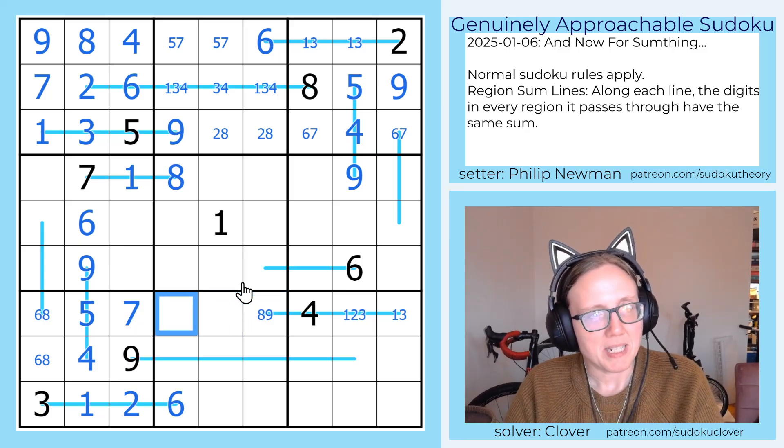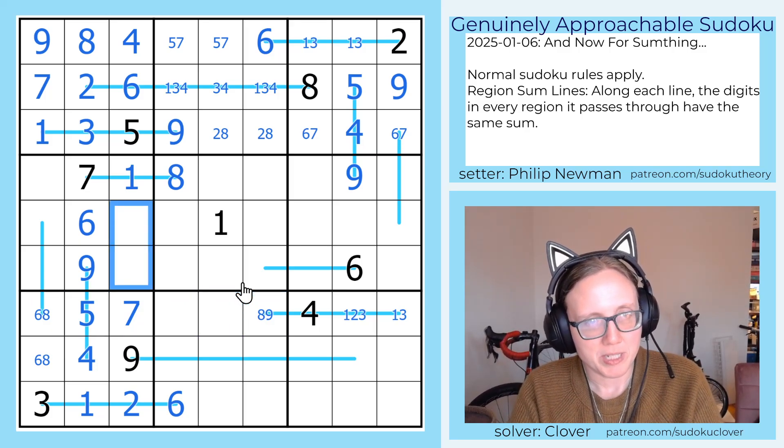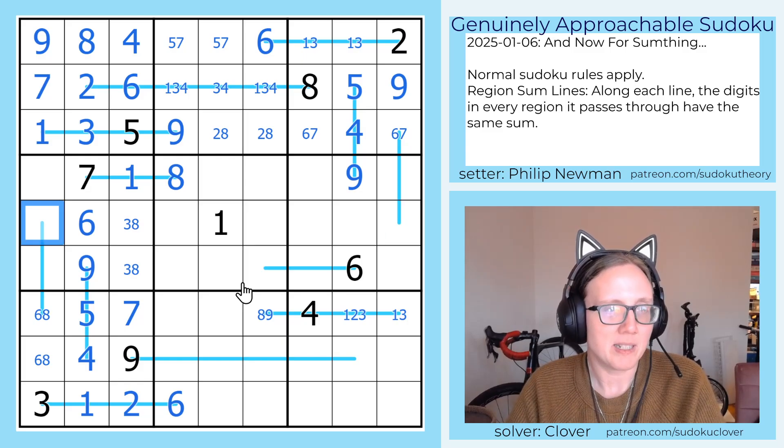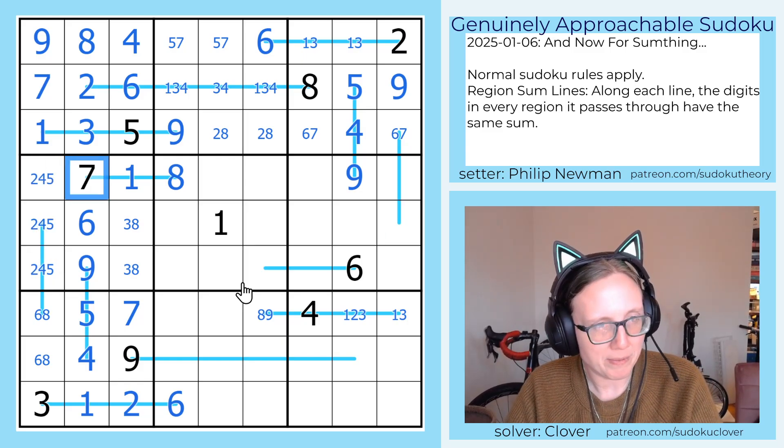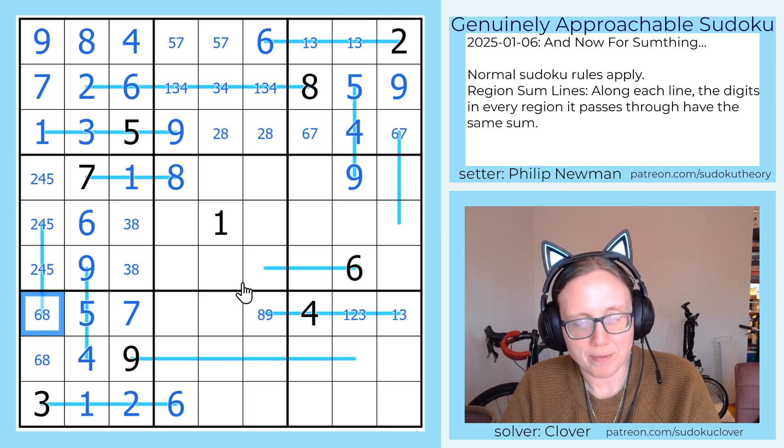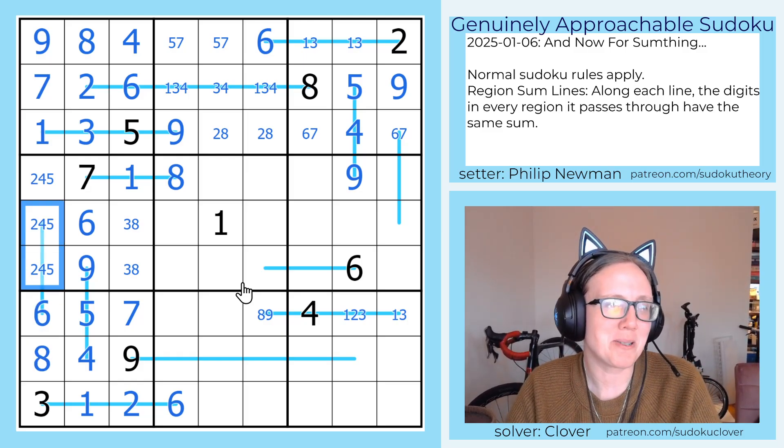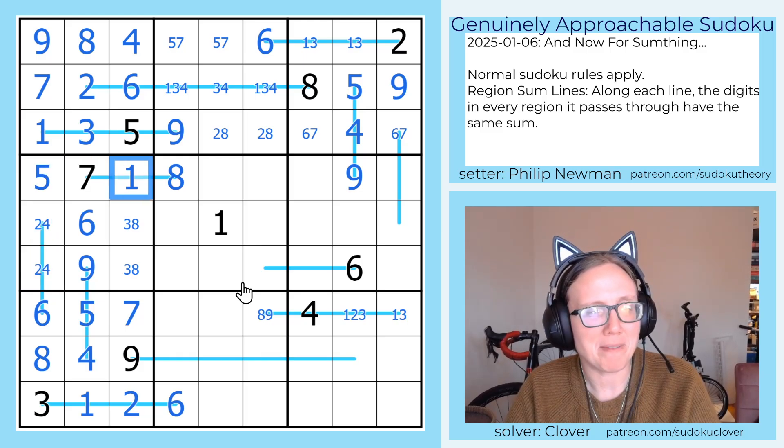This can no longer be a 7. These cells by sudoku are going to contain 3 and 8. These are going to be 2, 4, and 5. Now there's not any way we can make an 8 out of two numbers out of 2, 4, 5. So this must be a 6, which is going to be 2 plus 4, and place a 5 up here.